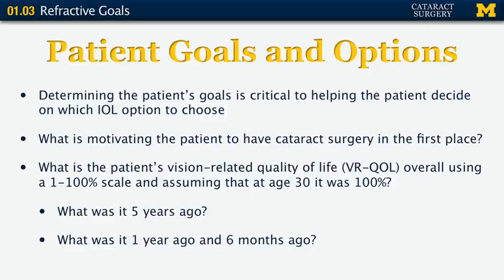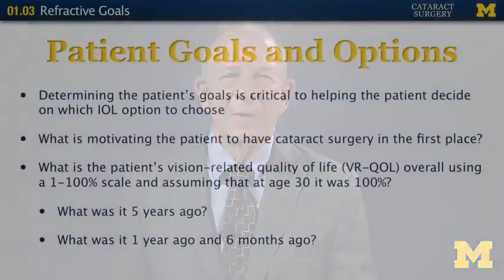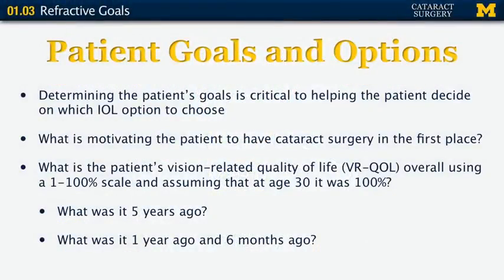What's the motivating factor or factors for the patient to have cataract surgery in the first place? What's their vision, and what's their vision-related quality of life? The vision-related quality of life is far more important than the visual acuity on the eye chart. I like to use a scale of 1 to 100 and ask about vision-related quality of life, assuming that at age 30 it was 100%. So I'll ask the patient what it was five years ago — maybe 95% — and what was it a year ago.